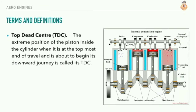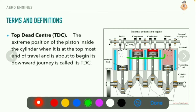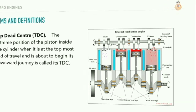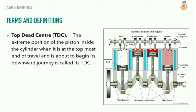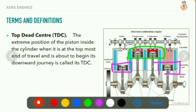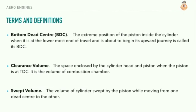Top dead center: the extreme position of the piston inside the cylinder when it is at the topmost end of travel and is about to begin its downward journey. Bottom dead center: the extreme position of the piston inside the cylinder when it is at the lowermost end of travel. Clearance volume: the space enclosed by the cylinder head and piston when the piston is at top dead center. It is the volume of the combustion chamber.